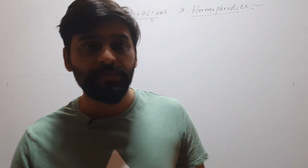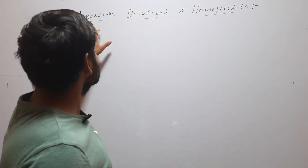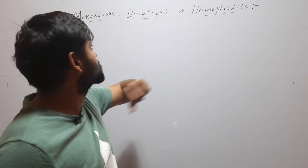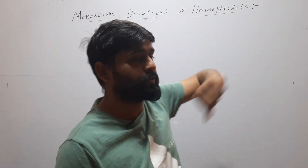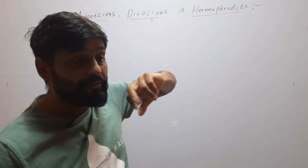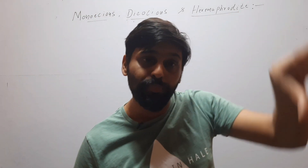Hello friends. Welcome to my YouTube channel. In this video we will discuss these three terms: Monoecious, Dioecious, and Hermaphrodite. We will discuss these three terms in context of plants.